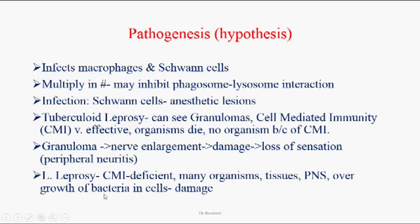In lepromatous leprosy, the majority of patients have cell-mediated immune deficiency — they won't have a good cell-mediated immune response. So many organisms can be seen in the lesions of lepromatous leprosy. Overgrowth of bacteria in cells damages tissues, leading to loss of digits, loss of nasal septum, loss of testes, and disfigurement.